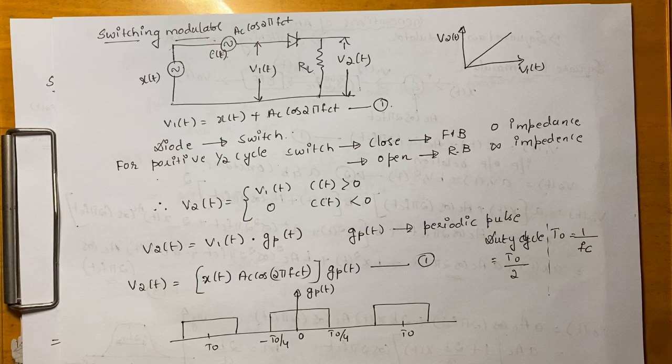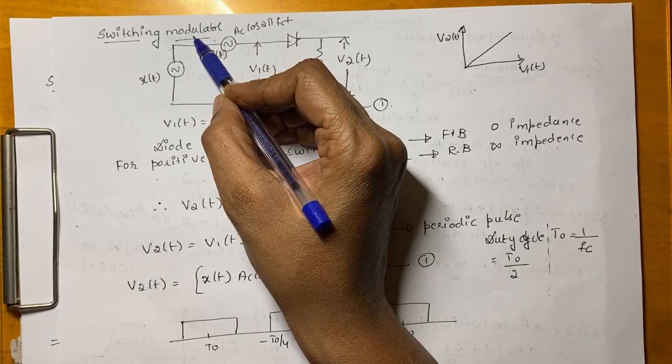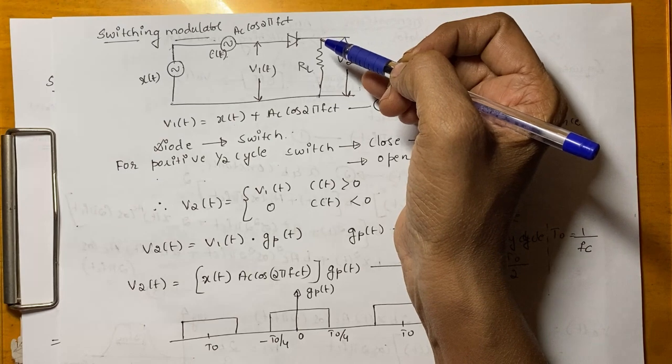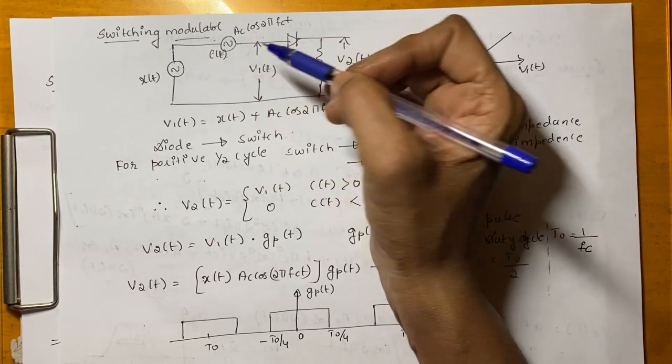Hello everyone, now we will be looking through this switching modulator which is another method of generation of an AM signal. As we know that in generation of an AM signal, two signals are required.